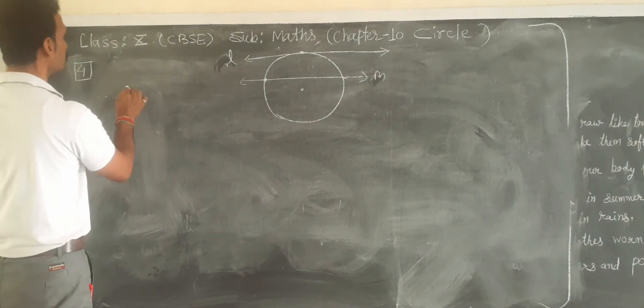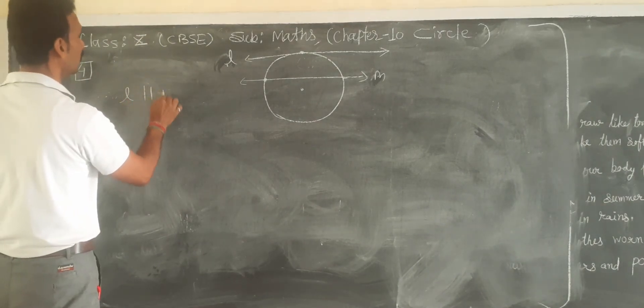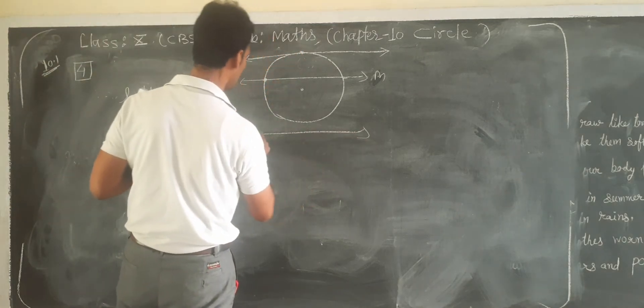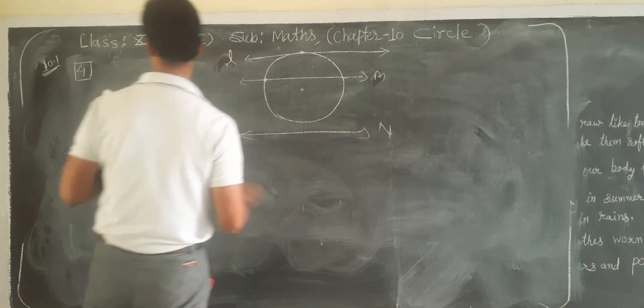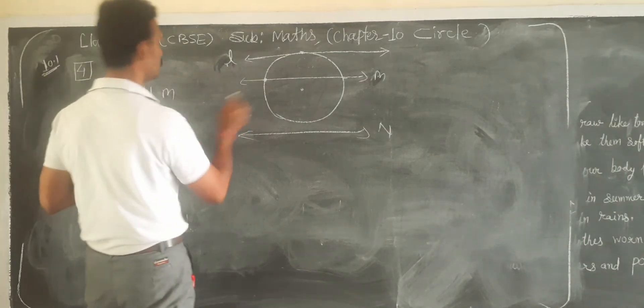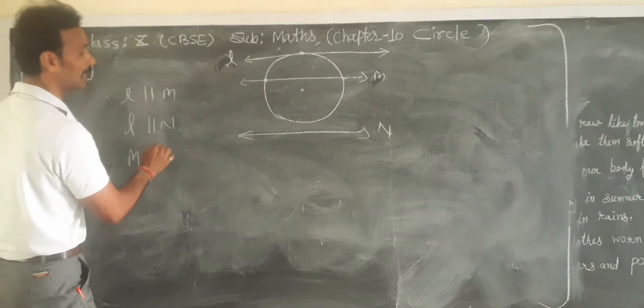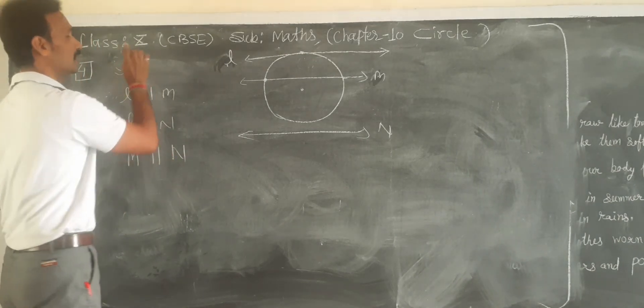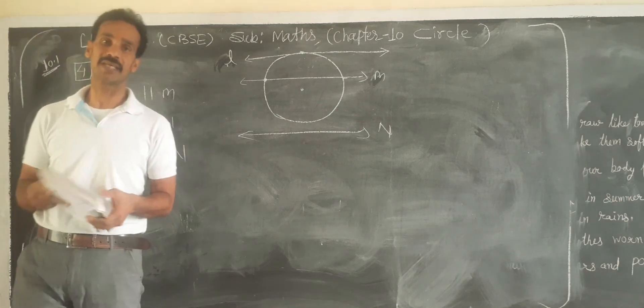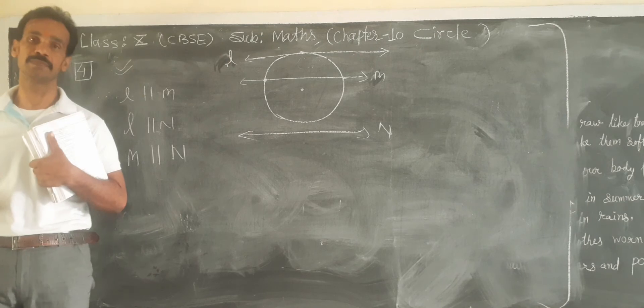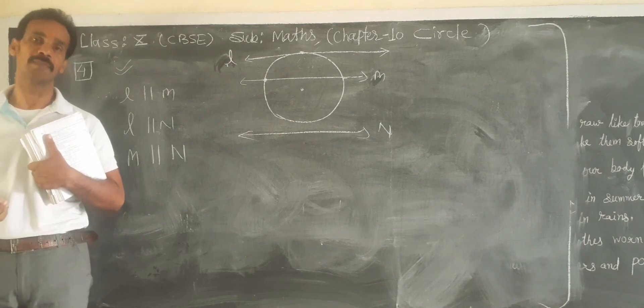This is a circle. One is going to touch at the point, and the other is secant intersecting the circle at two points.